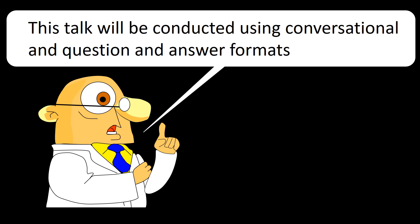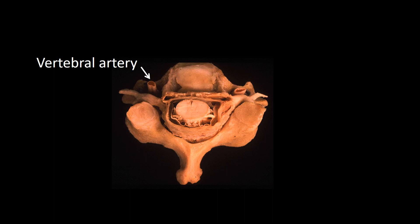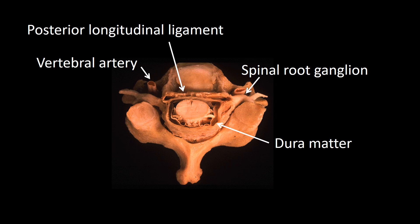The talk will be conducted using conversational and question-and-answer formats. The first question is: the layer indicated is the arachnoid — true or false? In this specimen you can see the vertebral artery, the posterior ligament, a spinal root ganglion, and dura matter, which I have now traced in magenta to make it easy to indicate the epidural space.